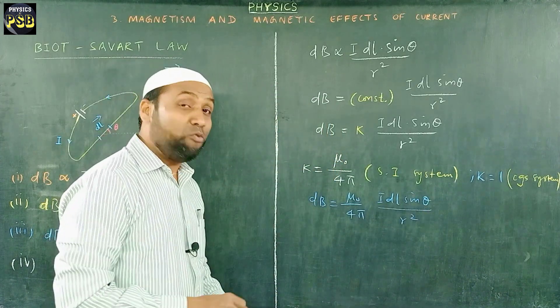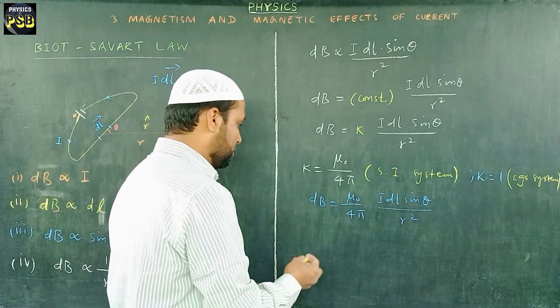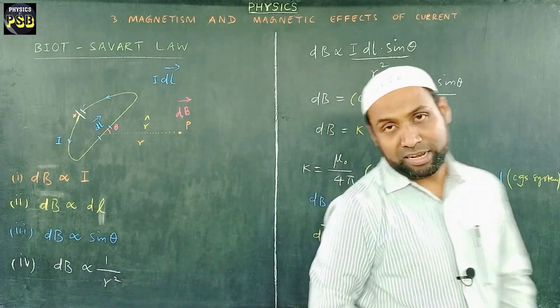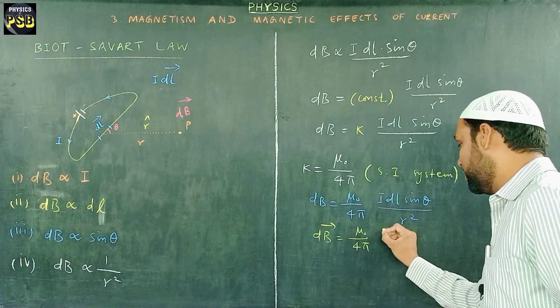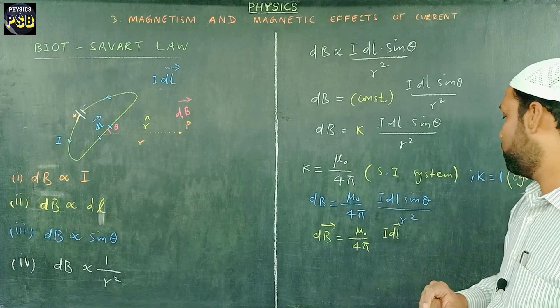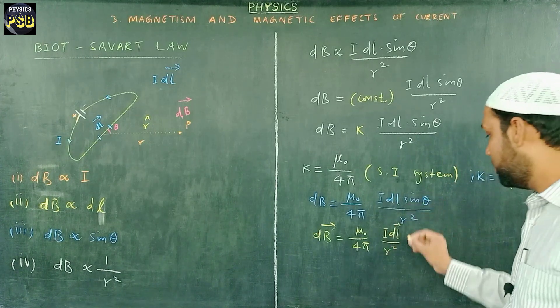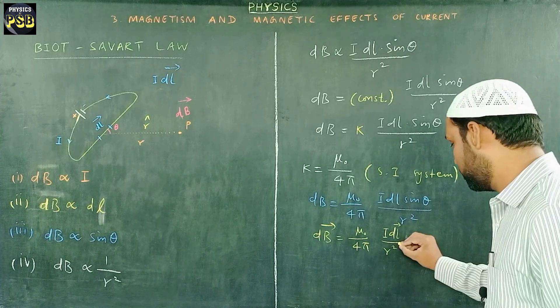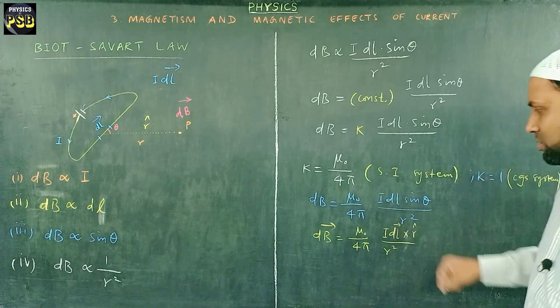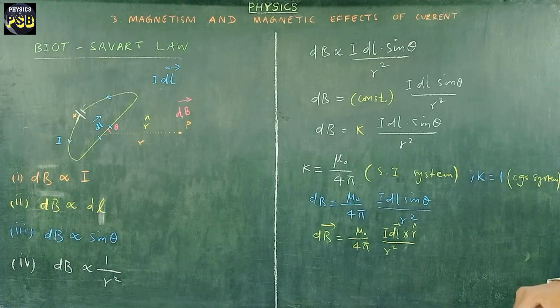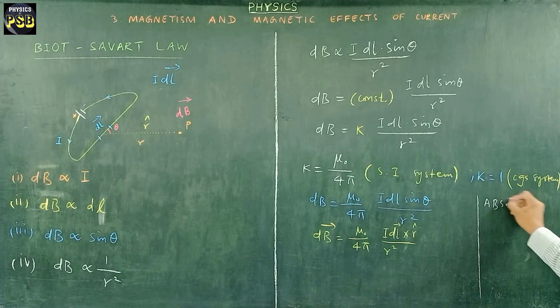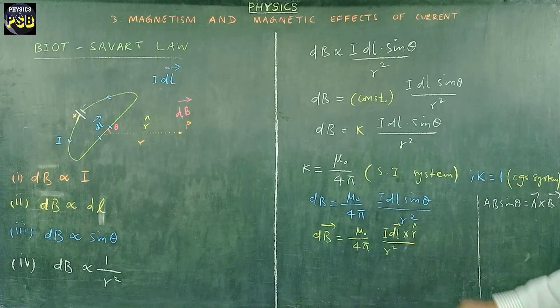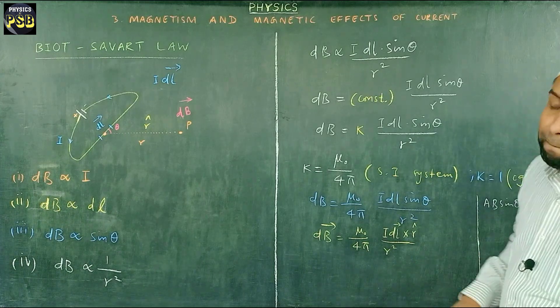Now I am going to write this in vector form. dB vector equals μ₀ upon 4π, I dl vector cross r cap divided by r square. How do you obtain this? Here we know a b sine theta can be known as a vector cross b vector. Now we have followed this method here to get this final expression. This final expression represents Biot-Savart law and it gives the expression for magnetic field at a point P due to a current carrying conductor.